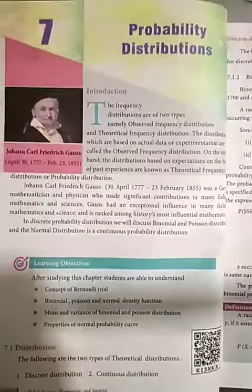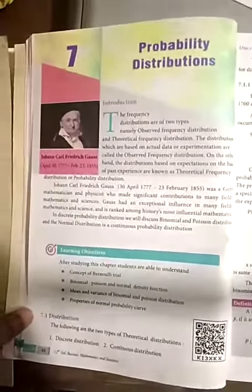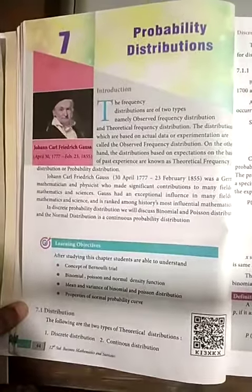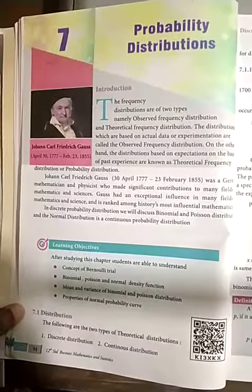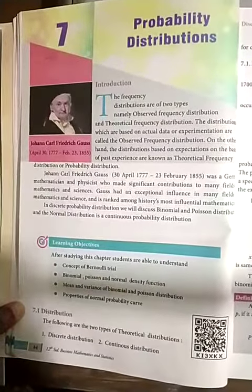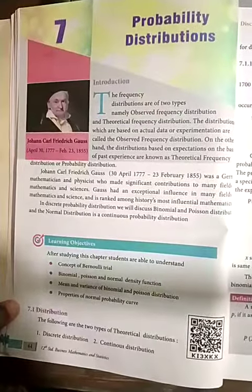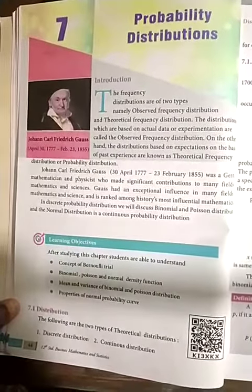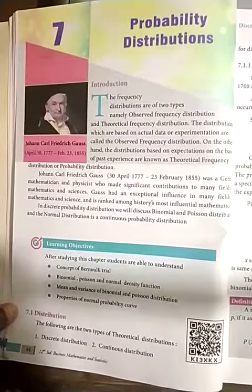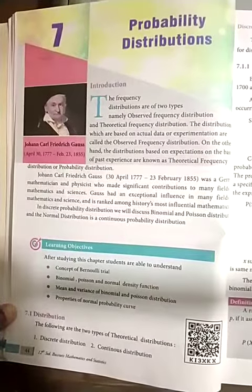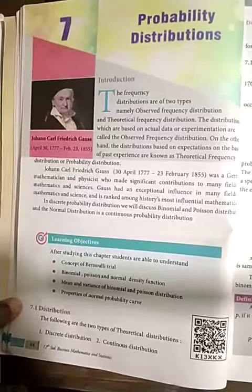Good morning Shweta. Today we are going to see about the 7th chapter, which is nothing but probability distributions. We are going to discuss 3 distributions in this chapter: the first one is the binomial distribution, the second one is the Poisson distribution, and the third one is the normal distribution.